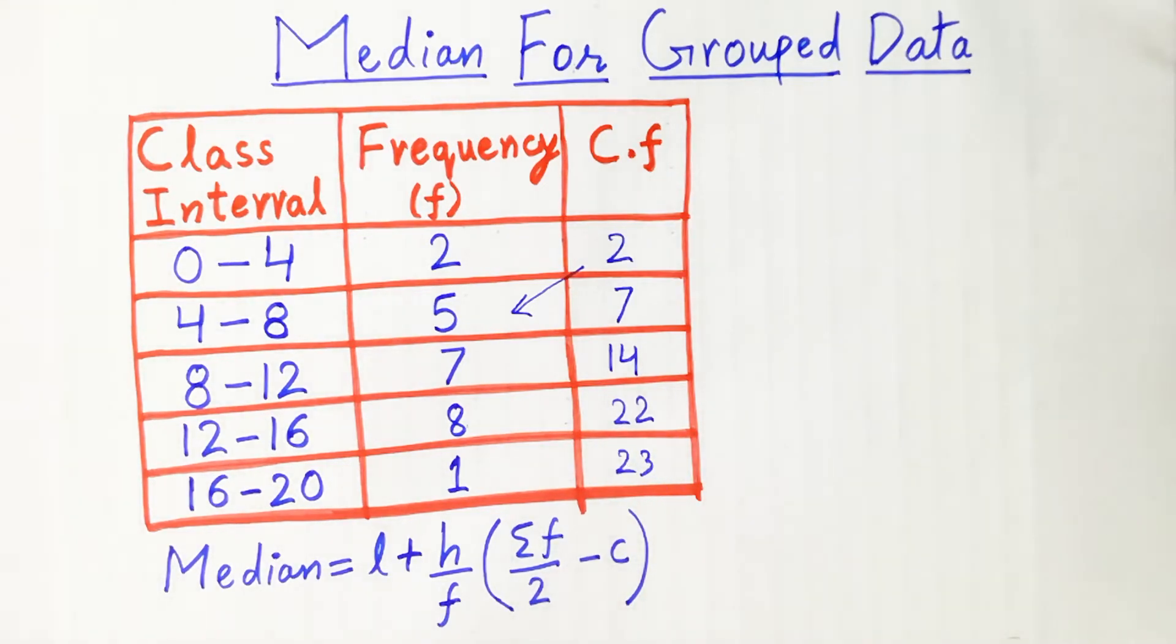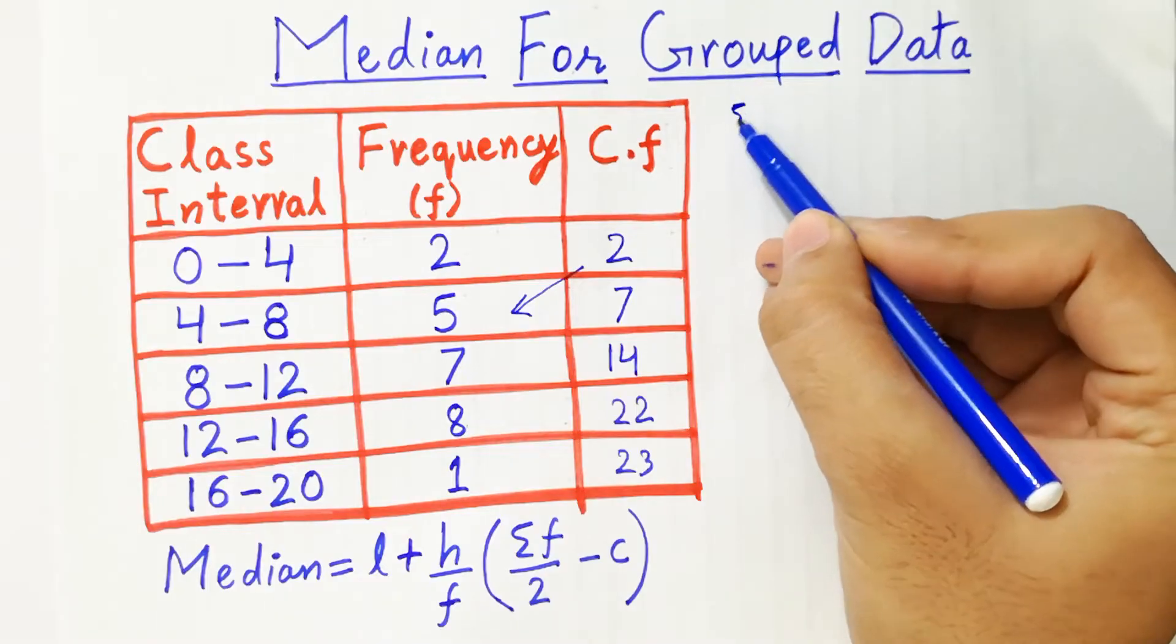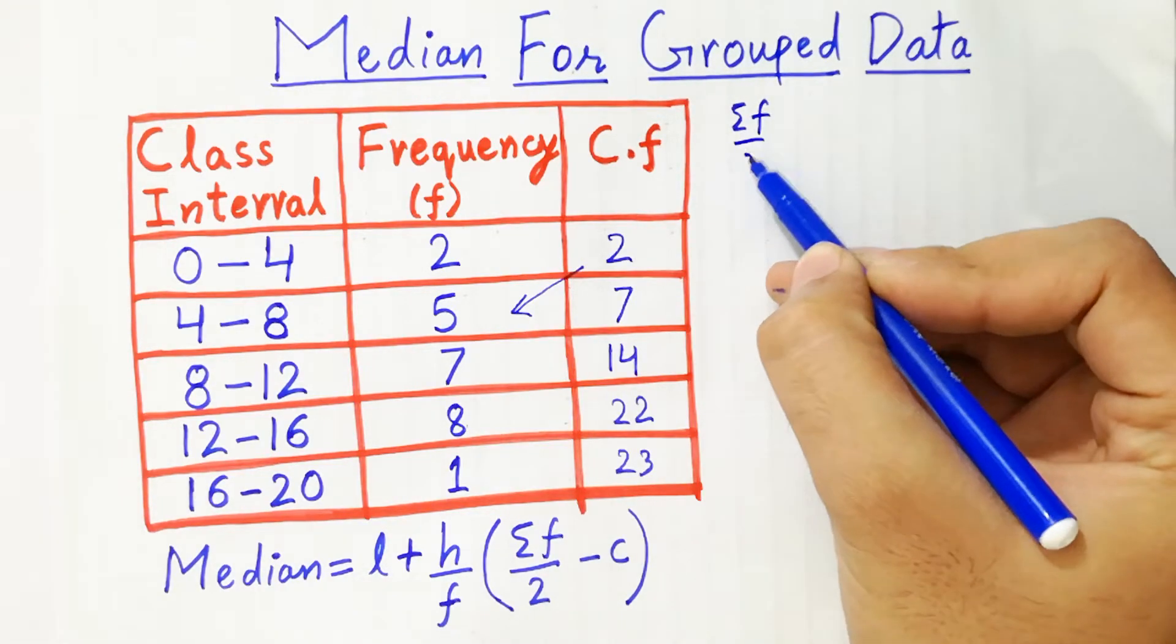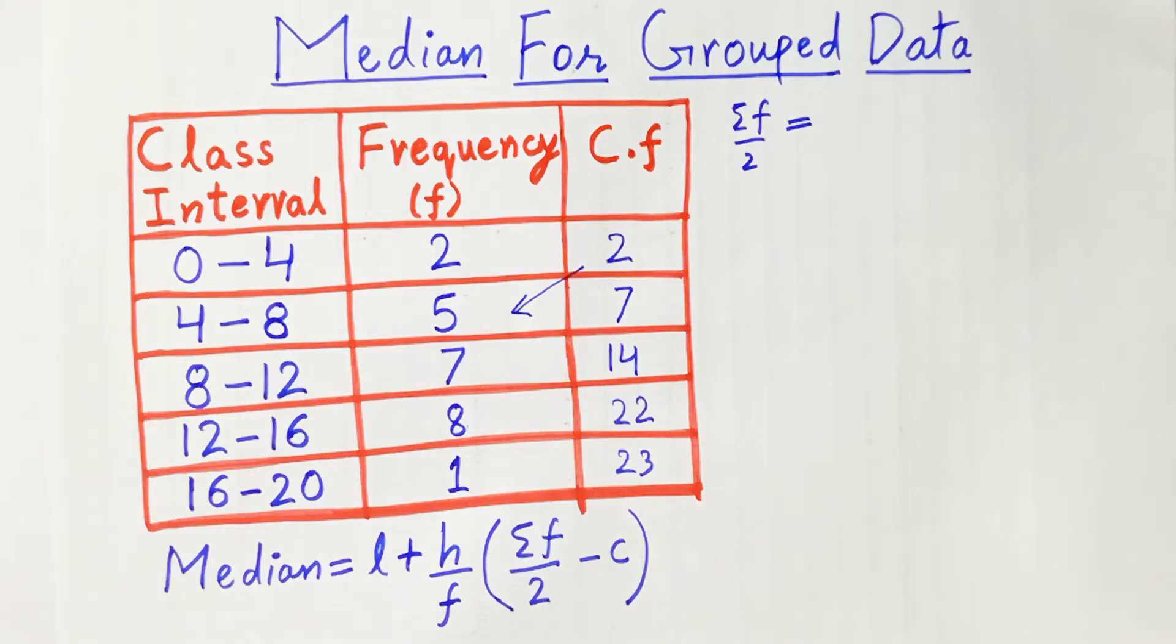That's the first step. Second step, you have to calculate summation f over 2. The formula of median is l plus h over f bracket summation f over 2 minus c. You can also say that cumulative frequency.